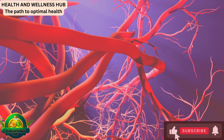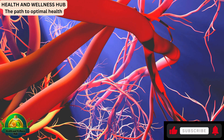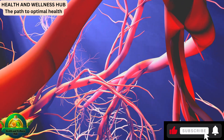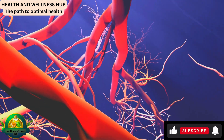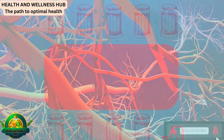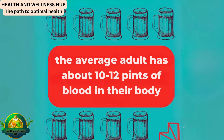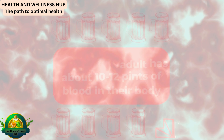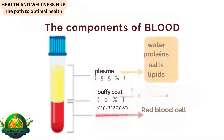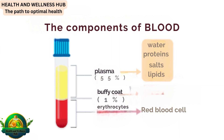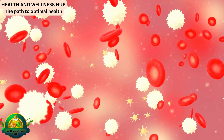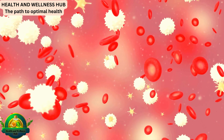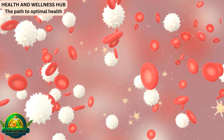Understanding blood. Blood, the life-sustaining medium in our bodies, is a complex fluid with multiple functions. It helps to maintain pH, temperature, and osmotic pressure, all vital for homeostasis. The average adult has about 10 to 12 pints of blood in their body. This remarkable fluid consists of plasma — containing water, proteins, salts, and lipids — as well as cellular elements such as red blood cells, white blood cells, and platelets, each with their unique roles.